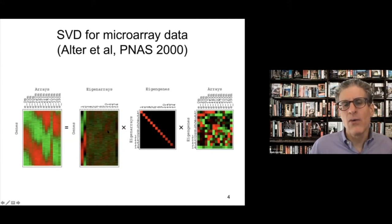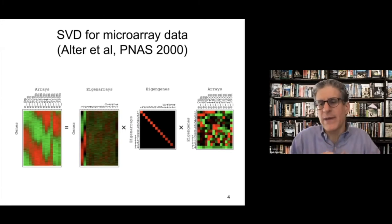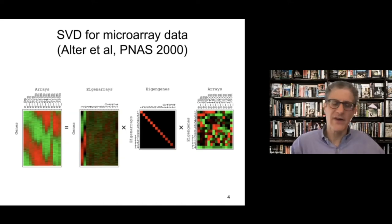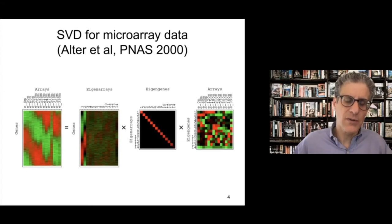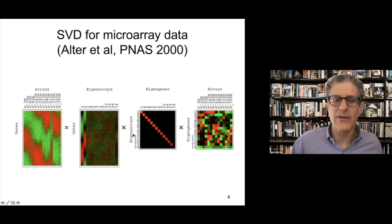This particular thing is called different arrays, just because this paper was done a while ago. And the assays were gene expression arrays. So they were called arrays. But these are essentially different assays, different features going across. So that's the data matrix that we're interested. And now, what this approach called SVD does is it's going to decompose our data matrix into three matrices.